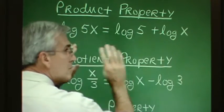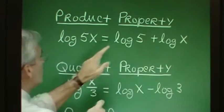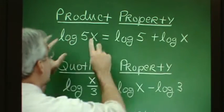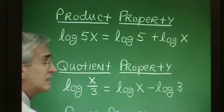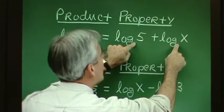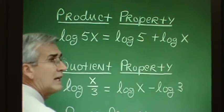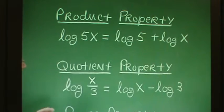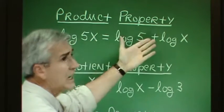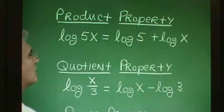When we have the sum of two logarithms with the same base, we can write it as the logarithm of a product — the log of the product of 5 and x. This property works for all bases: ln, log base 7, log base 5, or whatever, as long as the base is the same in all expressions.